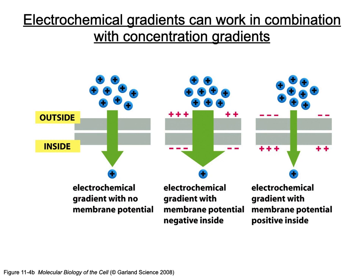Electrochemical gradients combine the electrical charge of the membrane with the ion moving across it. There are three scenarios: an electrochemical gradient with no membrane potential, one with a negative membrane potential on the inside, or one with a positive membrane potential on the inside. This concept becomes very important for action potentials, synapses, and muscle contractions — topics covered in anatomy and physiology.